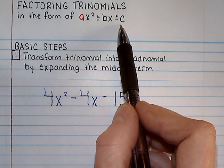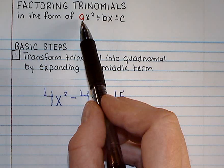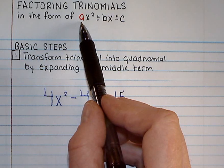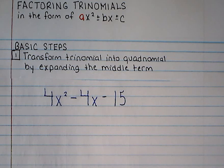And these are trinomials that are unique because they have a coefficient in front of the first term. And I want to show you a method that takes a lot of the guesswork out of factoring these trinomials.